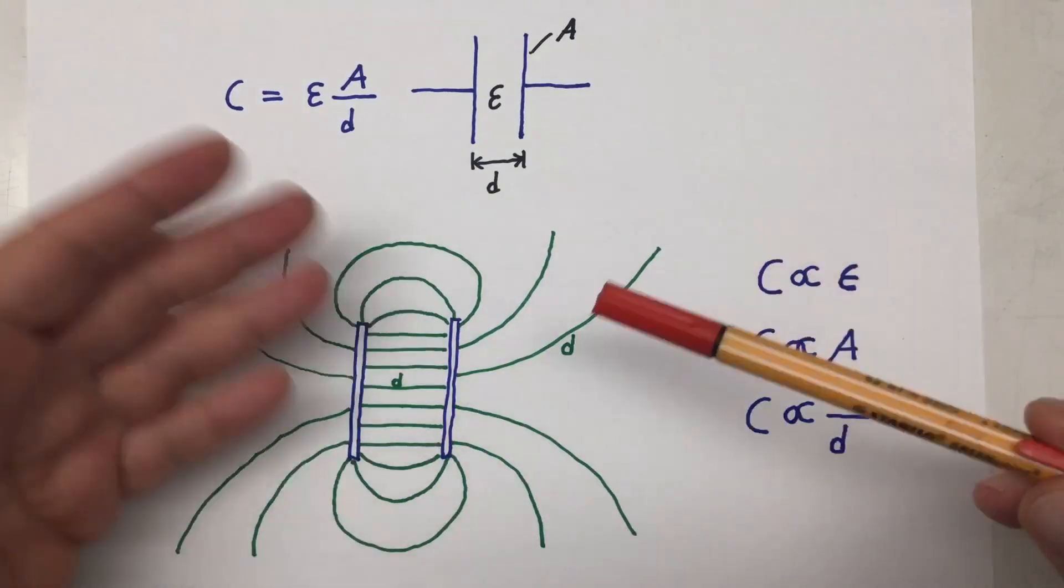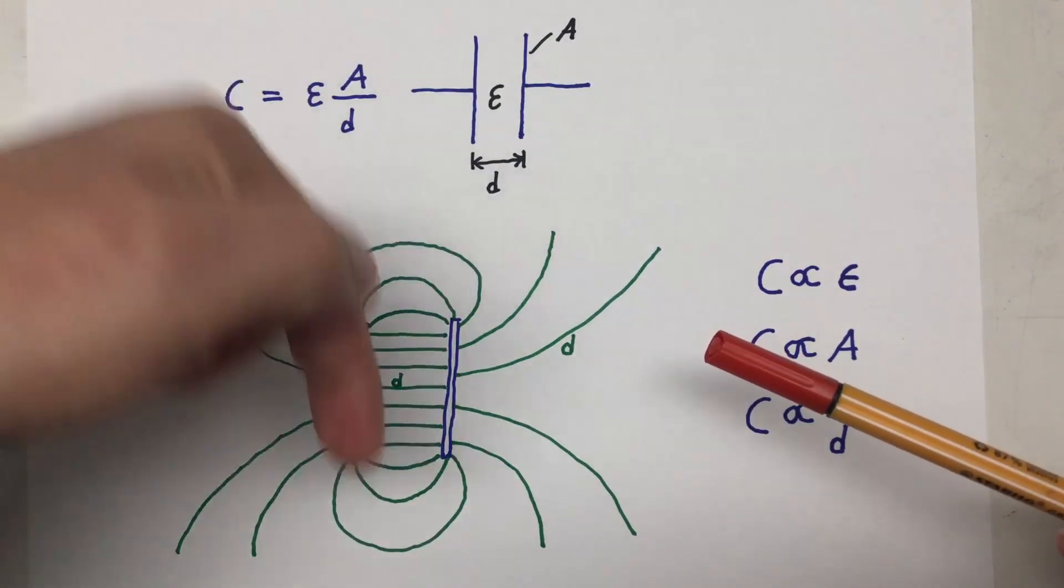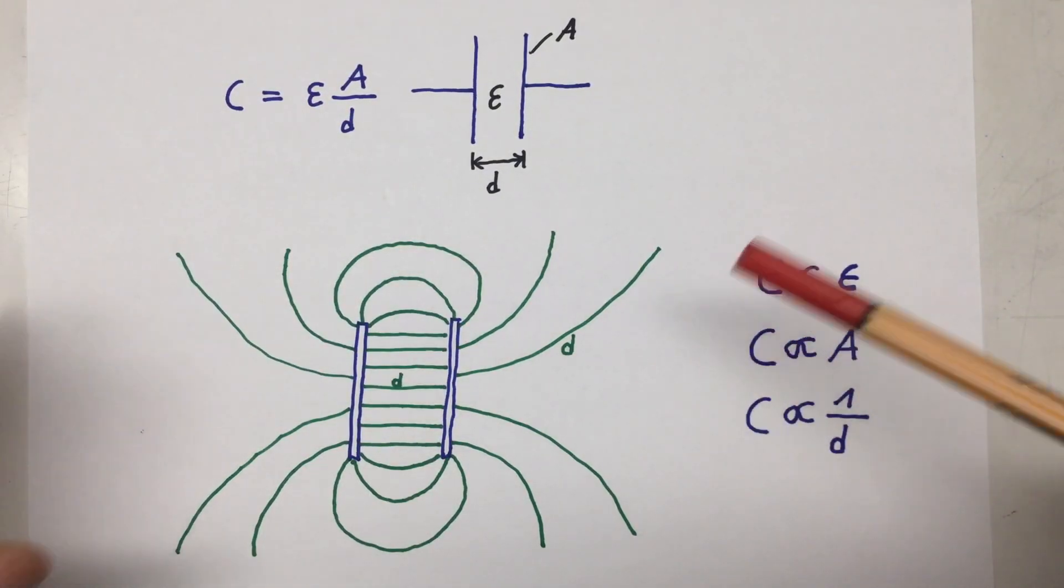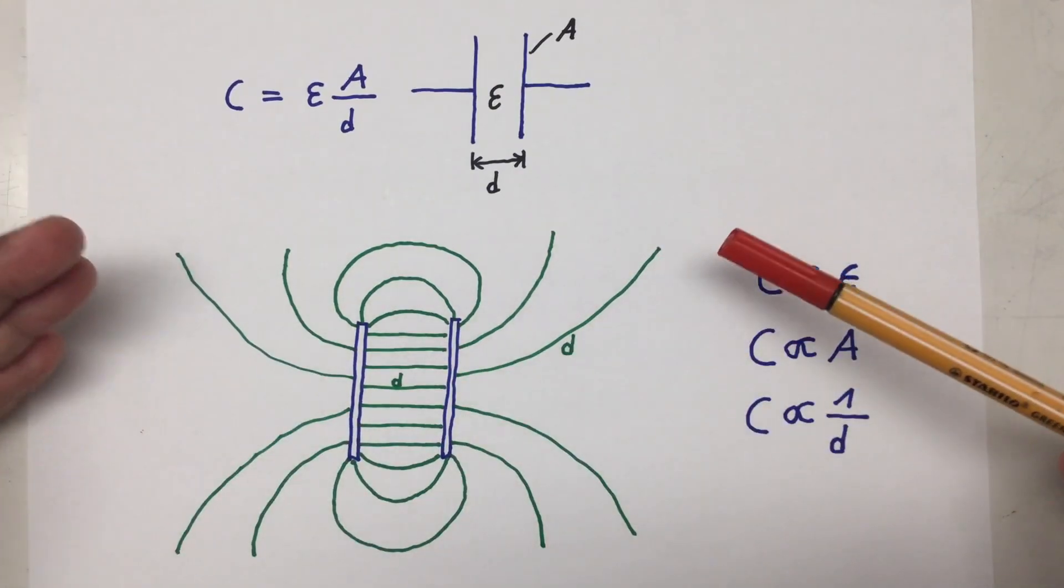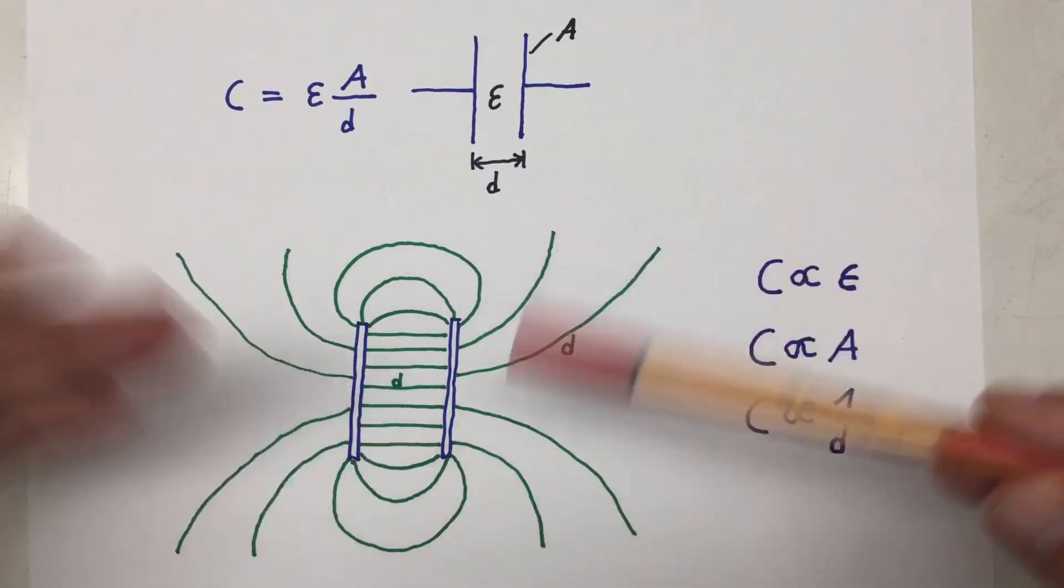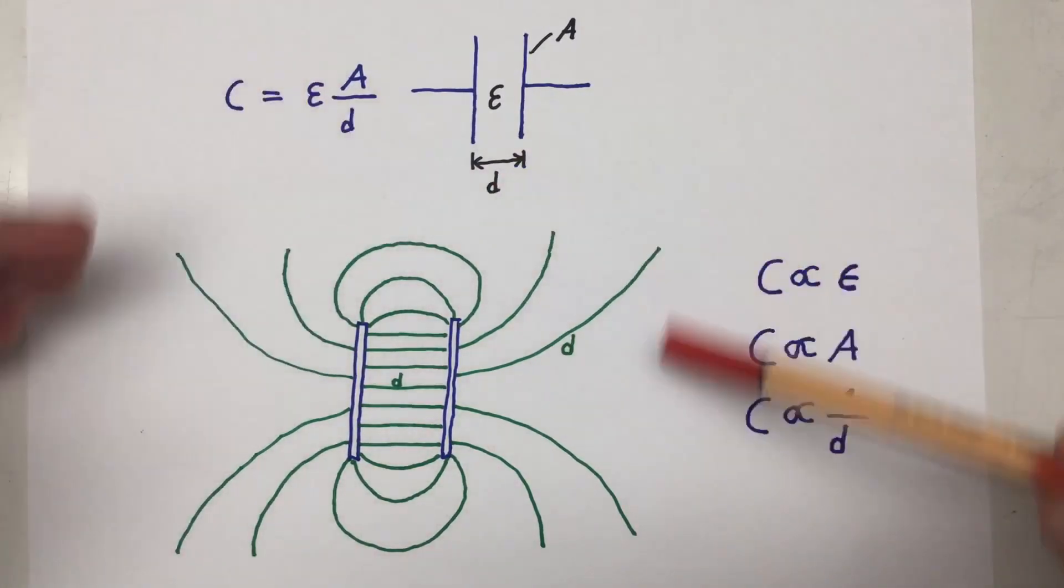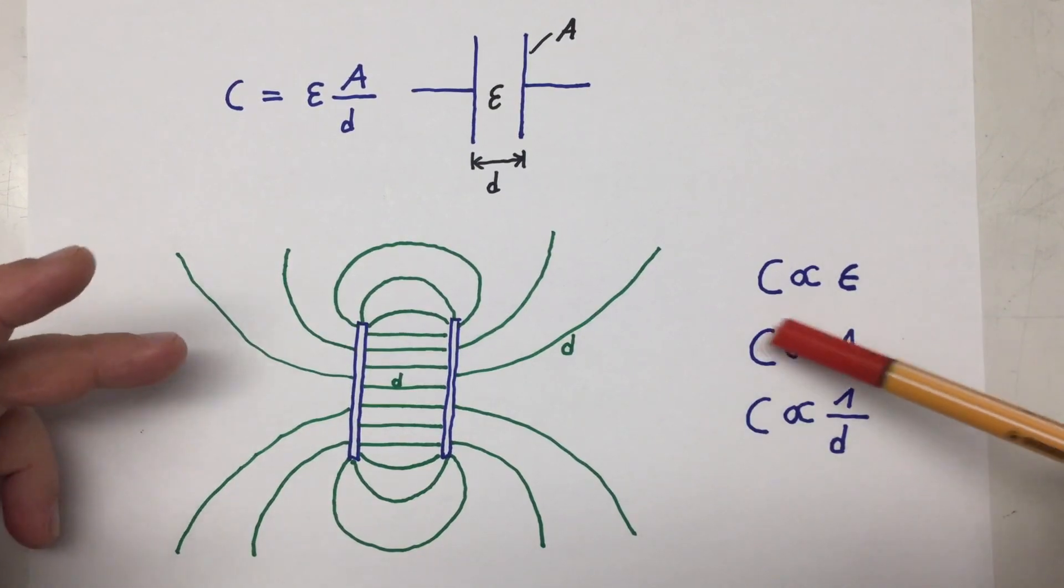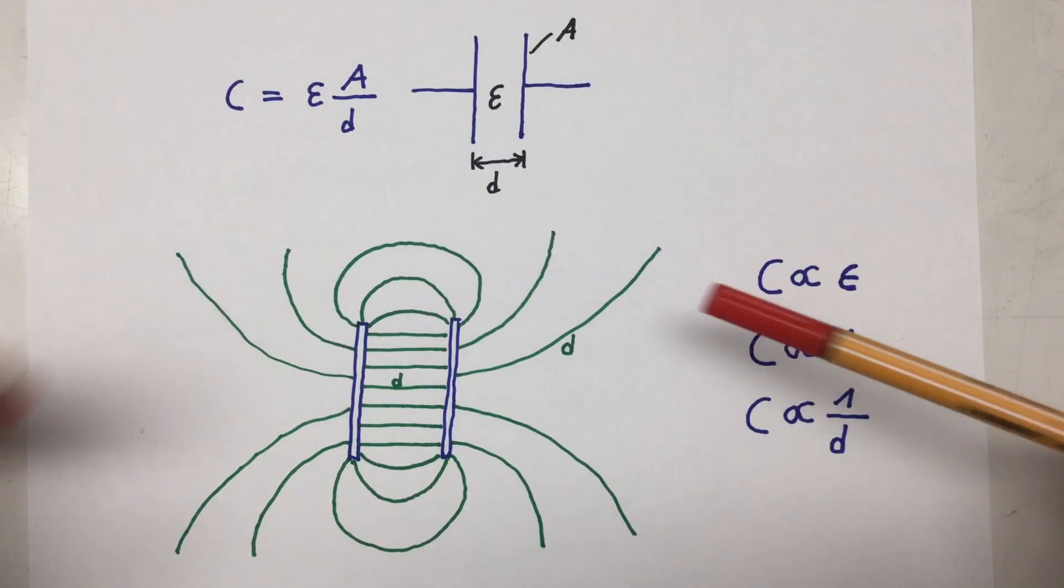So, here's a short recap. In part 1, and you'll find links to all parts in the description, we covered the basic physics of capacitance. We learned that capacitance is proportional to the permittivity of the isolating material, proportional to the area of your electrodes, and inversely proportional to the length of your electric field lines.